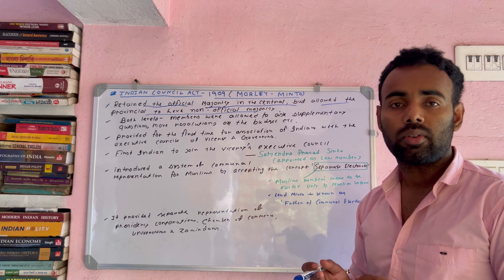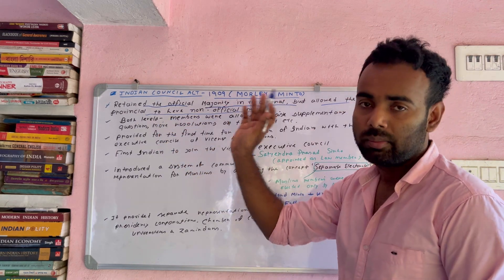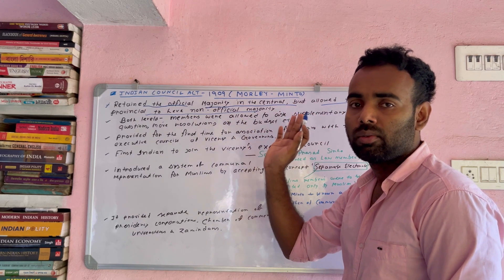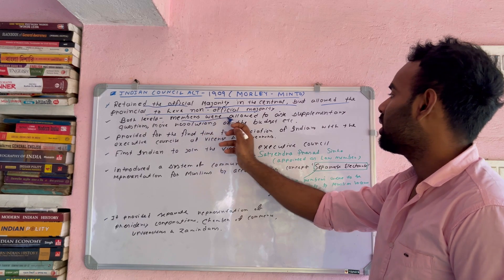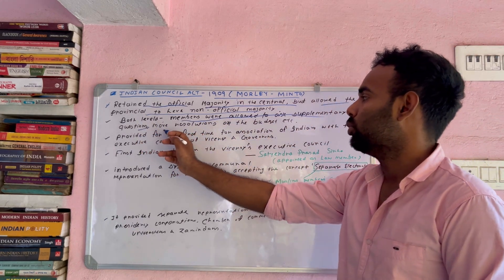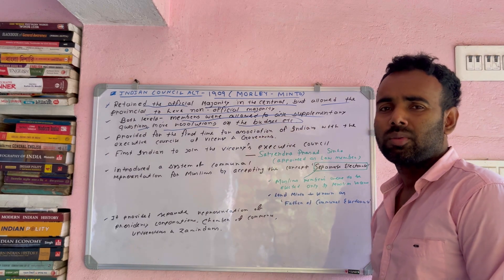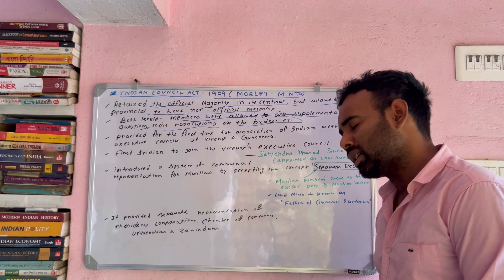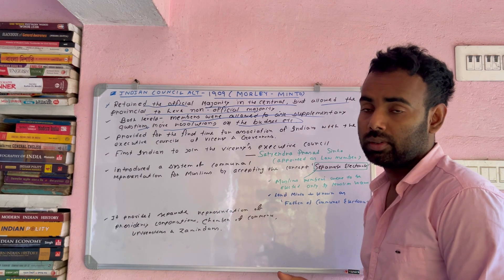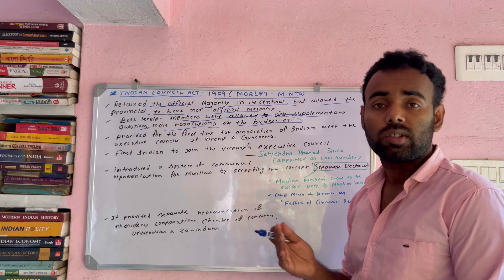The point is to expand powers at both levels. The central legislative council and provincial legislative council were allowed to ask supplementary questions and move resolutions on the budget. The budget and supplementary questions were given to the parliament, and resolutions could be made.